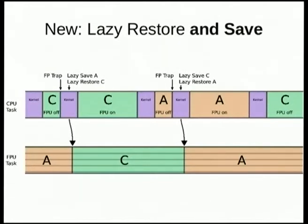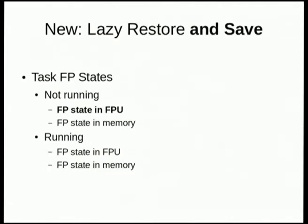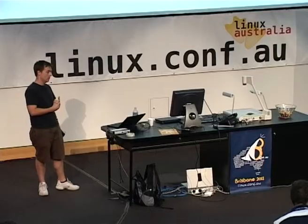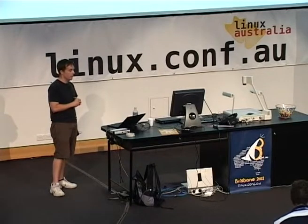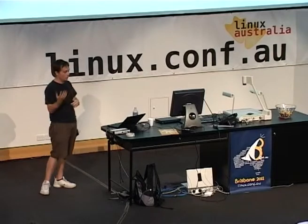If C comes along as a floating point intensive task, we still need to save and restore. C comes in with the floating point unit off; the floating point unit is associated with task A. When C traps into the kernel, the floating point unit changes over to C — the kernel saves A and restores C. We still have to take this trap if running two floating point intensive tasks. Now with SMP we have an additional state where the floating point state could possibly still be in a floating point unit somewhere — it may have been lazily saved, or it could be in memory. So we now have five possible places where our floating point state could be.